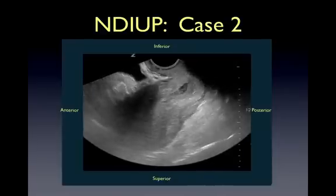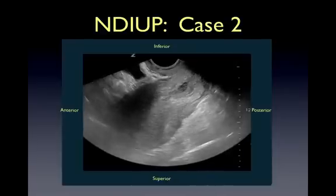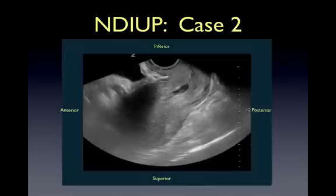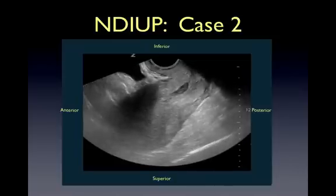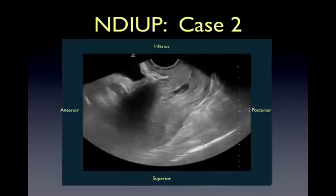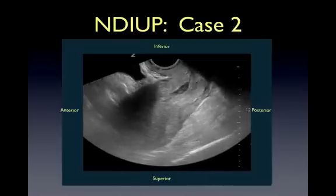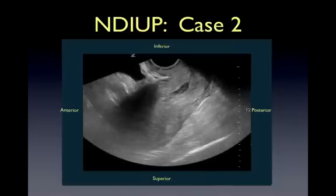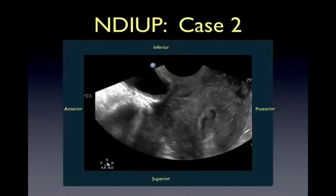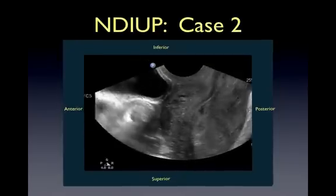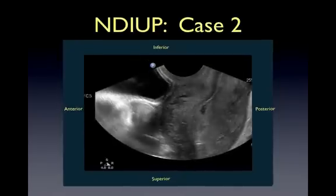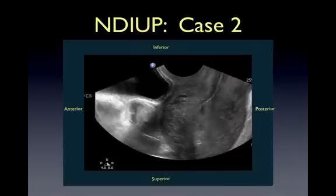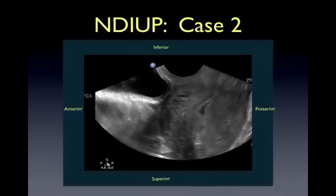Here's a second example of an NDIUP. We are looking at a sagittal view of the uterus, with the bladder seen anteriorly and inferiorly, and within the uterus there is a hypoechoic area that lacks a surrounding double decidual sign or yolk sac. On closer inspection, it still lacks a double decidual sign or yolk sac, and likely represents a clot or polyp in the endometrium.